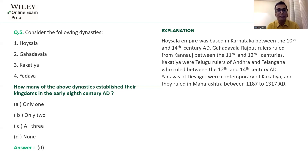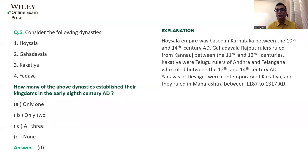Gahadavalas were Rajput rulers, mainly from the Banaras area but also ruling from Kannauj. They were from the 11th and 12th century AD. They were known for their confrontation with the Chauhan rulers of Ajmer. When Muhammad Ghuri attacked India and confronted Prithviraj Chauhan, the Gahadavala ruler Jayachand sided with Muhammad Ghuri, and in 1192, due to his treachery, Prithviraj Chauhan was defeated.